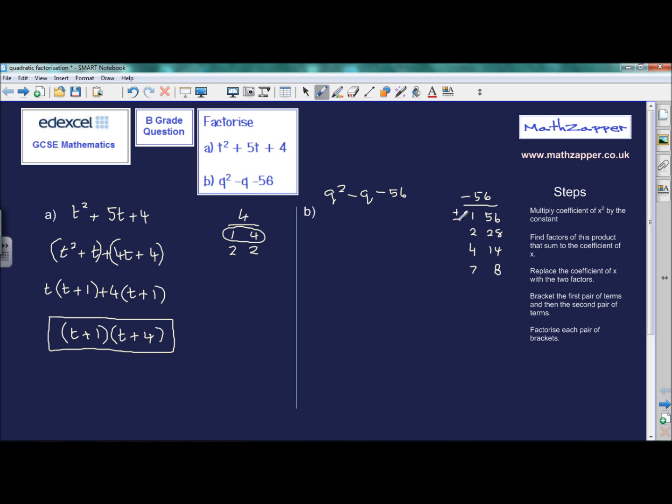Well, minus 56 because one of them will be plus and one of them will be minus. So we're now going to place a plus and a minus in front of the numbers that we've chosen as the factors that we're going to use.